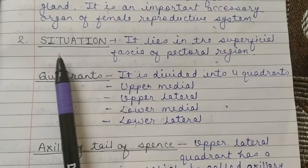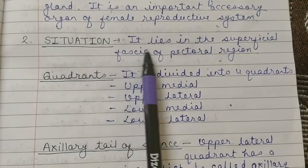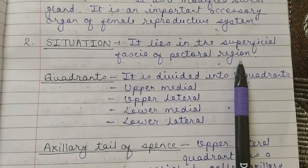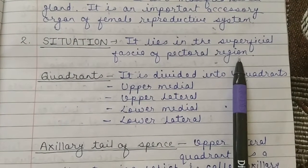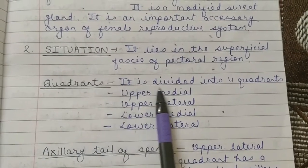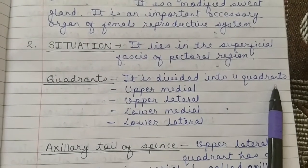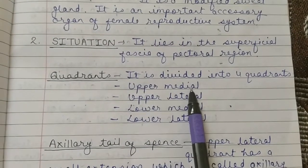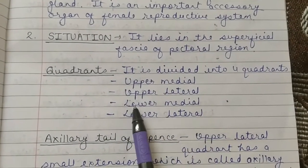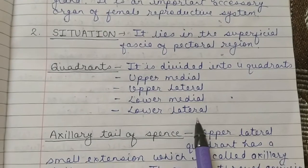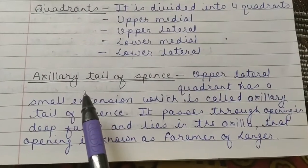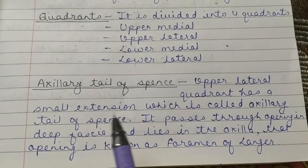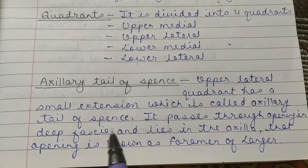The second point is the situation of the mammary gland. It lies in the superficial fascia of the pectoral region. It is divided into four quadrants: upper medial, upper lateral, lower medial, and lower lateral. The upper lateral quadrant has a small extension which is called the axillary tail of Spence.